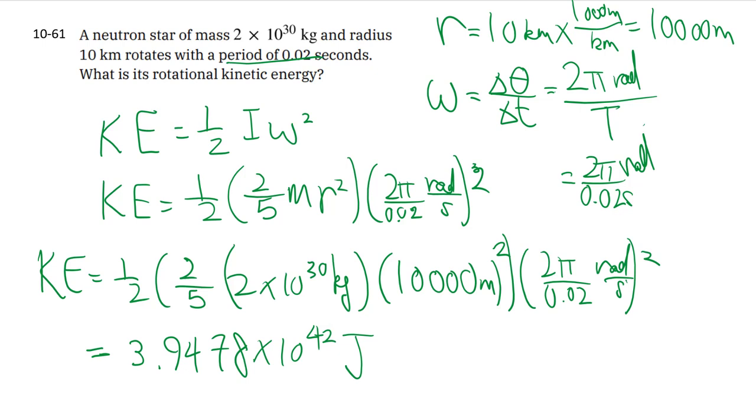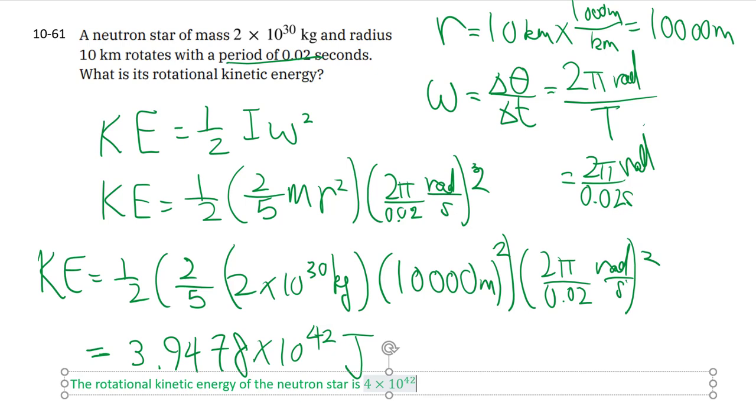And the unit is indeed kilograms meter square per second square. Again, radians can disappear as we wish. Which is a joule. We'll just keep the one digit, because the mass has only been given in one digit.